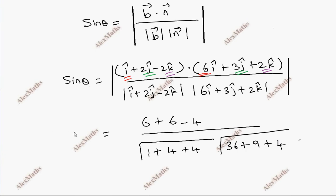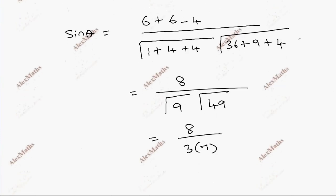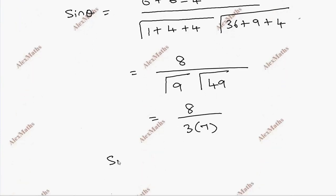The numerator is 8 divided by this is root of 9, this is root of 49. So square root, this is 3, this is 7. So sin theta is 8 by 21. Theta is sin inverse 8 by 21.